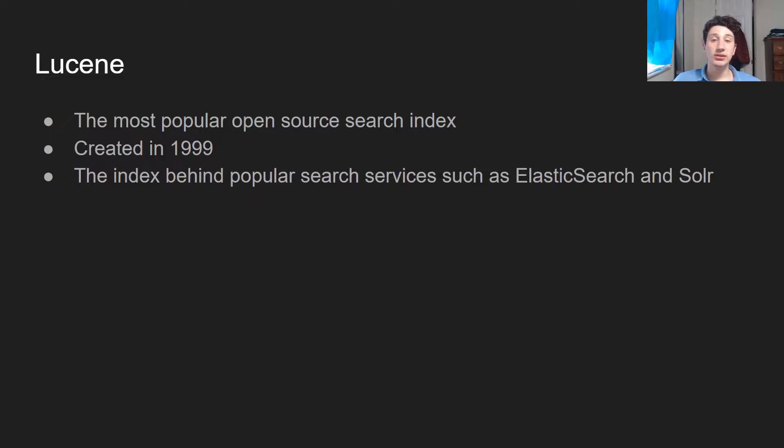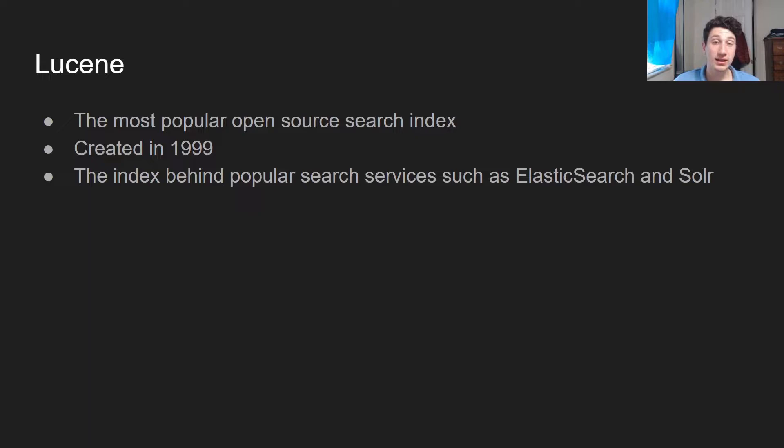What is Lucene? Lucene is what's known as a search index, and it's probably the most popular one. It's been around since 1999, and it's been open-sourced under the Apache license. The actual search companies that people tend to use — Elasticsearch and Solr — use Lucene under the hood. I'm going to first explain Lucene, and then I'll go into Elasticsearch and how it builds on that.